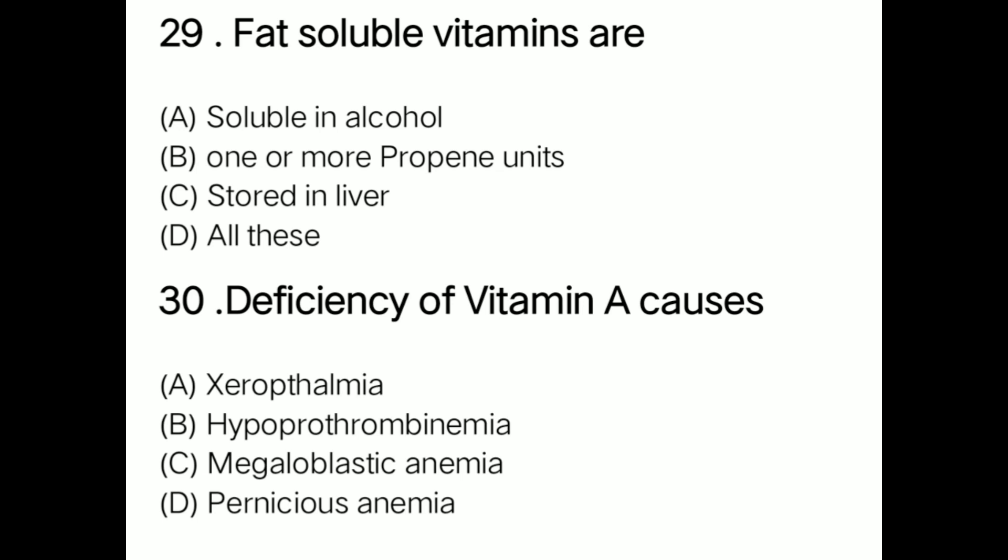Question: Fat-soluble vitamins are option A soluble in alcohol, option B contain one or more isoprene units, option C stored in liver, option D all of these. Correct answer is option D: all of these. Fat-soluble vitamins are soluble in alcohol, contain isoprene units, and are stored in the liver.